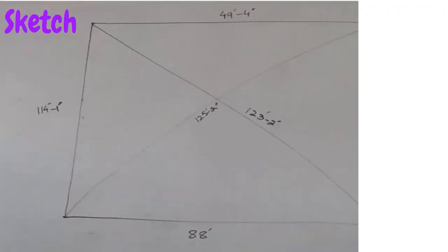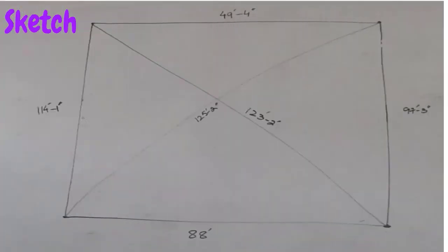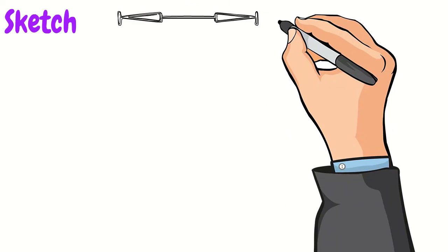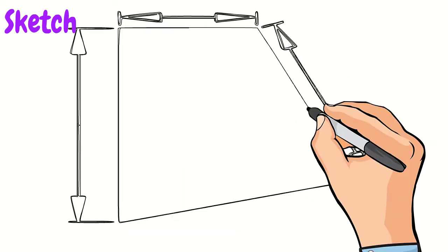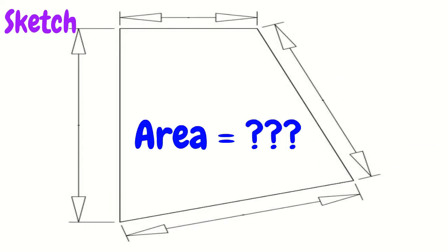The rough sketch of the irregular shape looks like that. In the next part I will show you the procedure how to find out the area of this irregular shape.